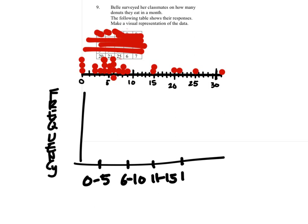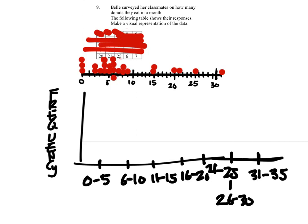16 through 20. This one's 21 through 25. 26 through 30. And then this one would be 31 through 35. So how many 0 through 5s do we have? 3, 6, 9, 10, 11. So we got 11. 1, 2, 3, 4, 5, 6, 7, 8, 9, 10, 11. So I would have a bar going all the way up to 11.